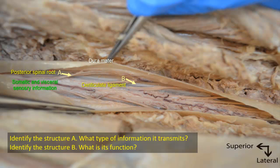Note that the ligament is serrated — it has lateral teeth by which it is attached to the dura, hence the name denticulate ligament. There are 21 pairs of these teeth, and they serve to stabilize the spinal cord within the vertebral canal.